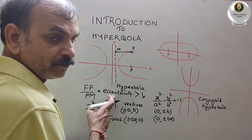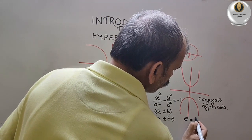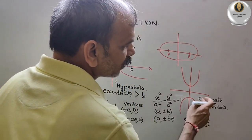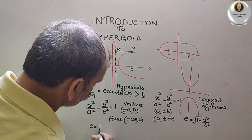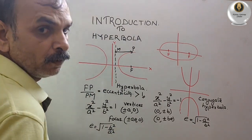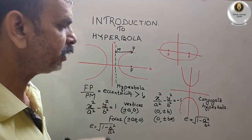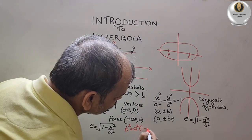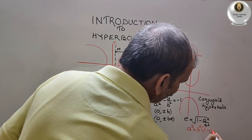To find out the eccentricity, the formula remains the same. For the conjugate hyperbola, e equals root over one plus a² by b². But for the hyperbola, it will be e equals root over one plus b² by a². And to find out the different coordinates, the formula remains the same: b² equals a²(e² - 1), and for the conjugate, a² equals b²(e² - 1).